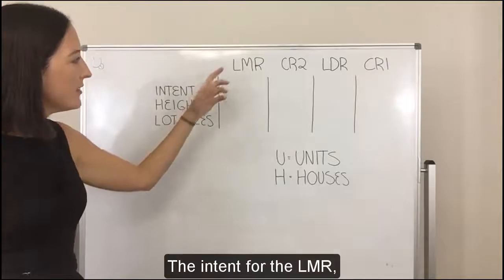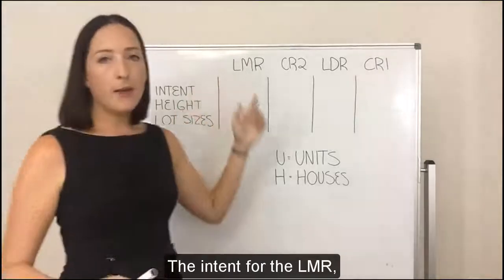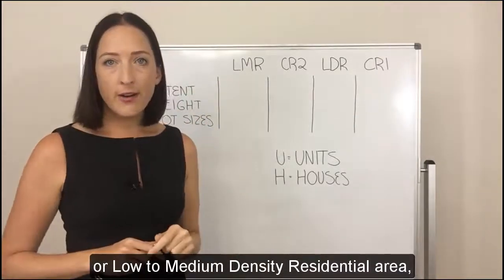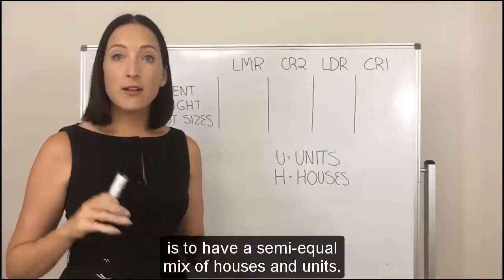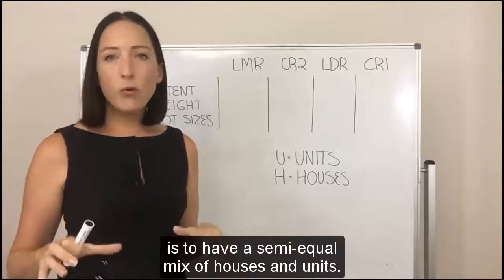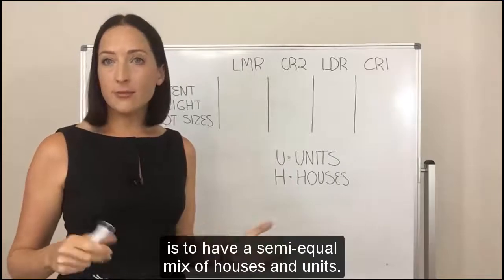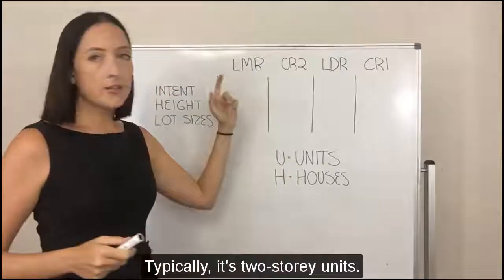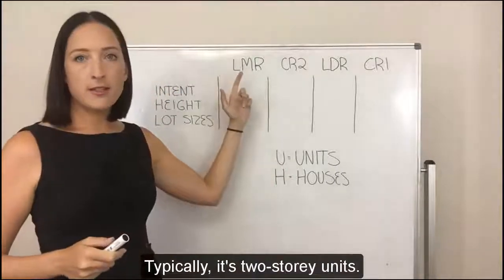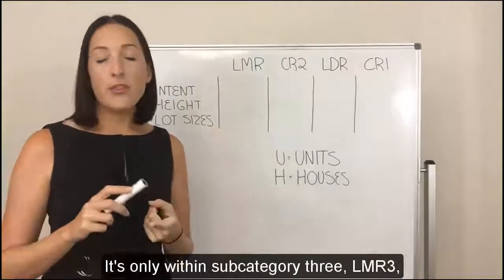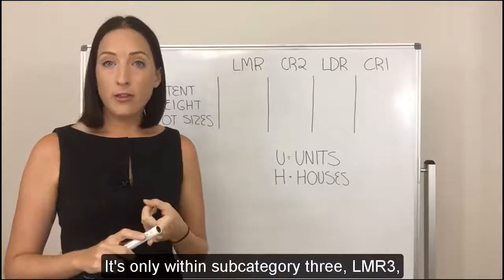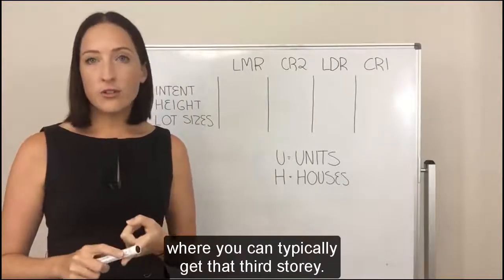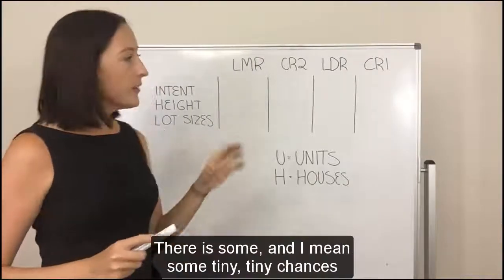The intent for the LMR, or low to medium density residential area, is to have a semi-equal mix of houses and units. Typically it's two-storey units. It's only within subcategory 3, LMR 3, where you can typically get that third storey.